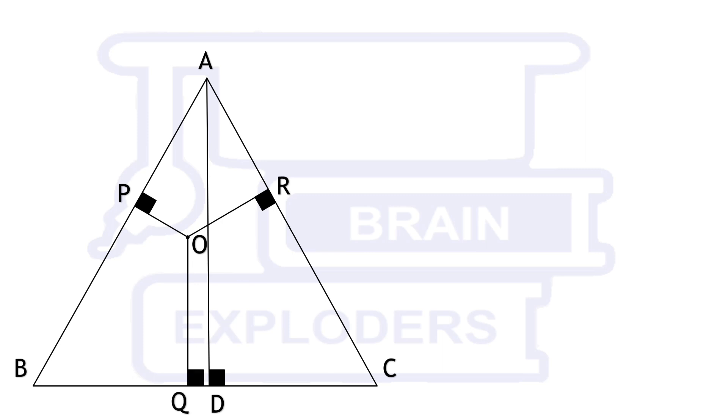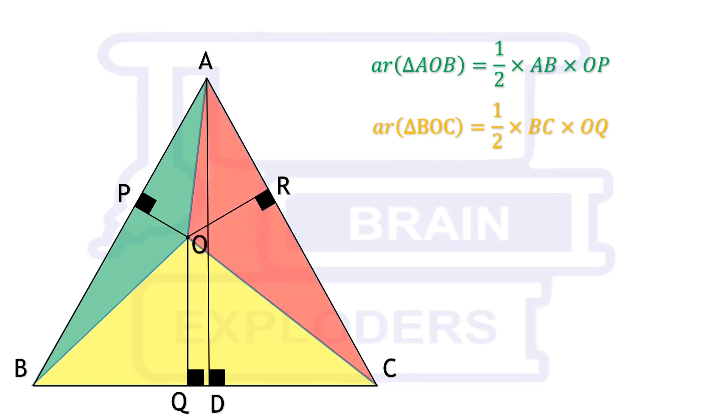Area of this green triangle is half base times its height. Its base is AB and height is OP, so area becomes half AB times OP. Similarly, area of this yellow triangle is half BC times OQ, area of red triangle is half CA times OR, and area of triangle ABC is half AD times BC.